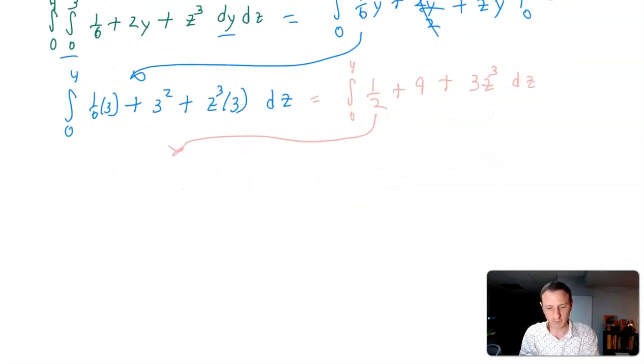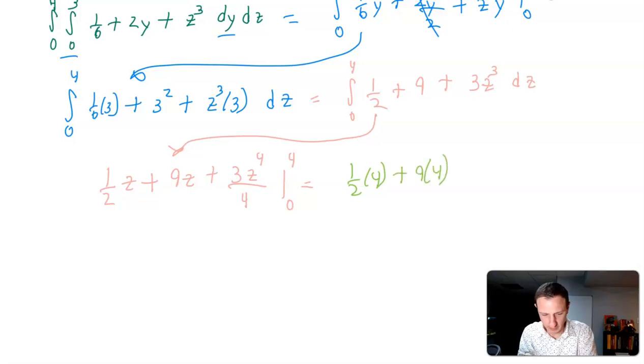So let's go over here. Integrating with respect to z, 1 half is a constant. So this is going to be 1 half z plus 9z plus 3z to the fourth over 4. And this is running from 0 to 4. Plugging in 4. So let's do 1 half times 4 plus 9 times 4 plus 3 times 4 to the fourth over 4. 1 half times 4 is going to give us 2. Plus 9 times 4 is 36. Plus, and this is going to be 3 times 4 to the third. So 192 there.